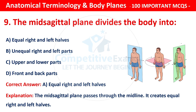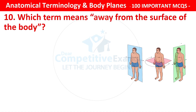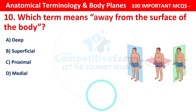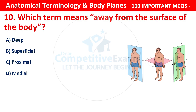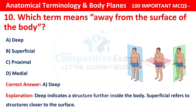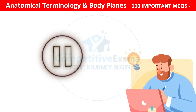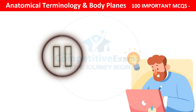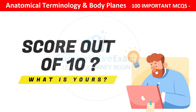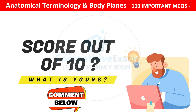Question number 10: Which term means away from the surface of the body? The options are deep, superficial, proximal, or medial. The correct answer is A — that is deep. Deep indicates a structure further inside the body. Superficial refers to structures closer to the surface. Kindly pause the video — out of these 10, how many did you get correct? Comment your score below. Let's see who's on top.